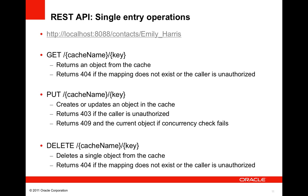The simplest set of operations supported by the REST API access or manipulate a single cache entry. The URLs consist of the name of the Coherence cache followed by the string representation of the entry's key — for example, a URL referencing the entry in the contacts cache with key Emily Harris. To access a cached object, a client performs an HTTP GET, which returns the JSON or XML representation, or an HTTP 404 if no such mapping exists or the caller is unauthorized. To create or update a cached object, a client performs an HTTP PUT with the JSON or XML representation in the request body; the server returns 403 if unauthorized, or 409 with the current object if a concurrency check fails.